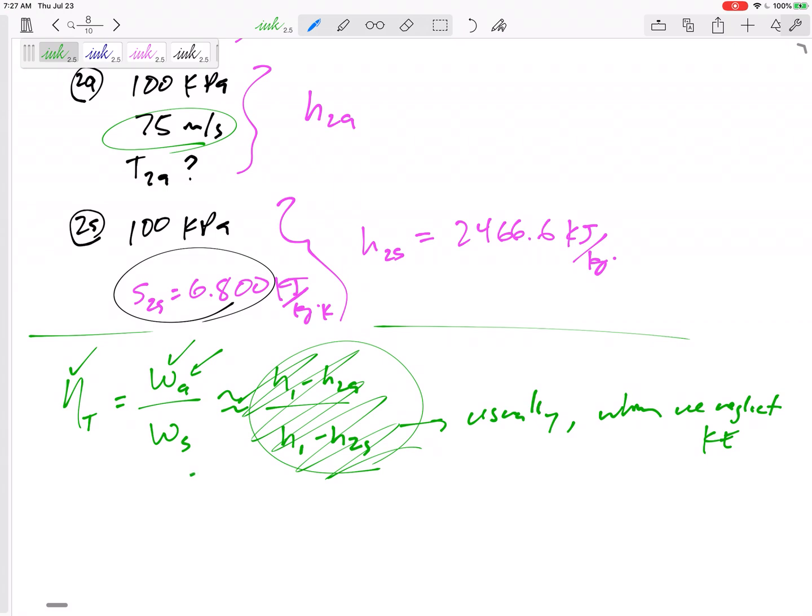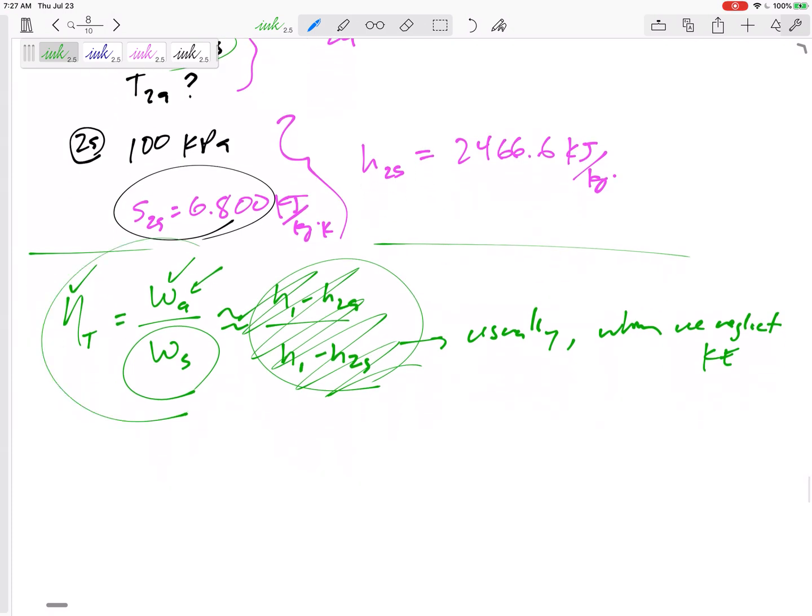I can find the work isentropic. So this is the equation I'm going to use: isentropic efficiency 0.77 equals work actual 5 megawatts over work isentropic. The work if it was isentropic is 6.494 megawatts. That kind of makes sense, right? We're getting 5 megawatts, but because it has an isentropic efficiency of 77 percent, the maximum possible is 6.494 megawatts.